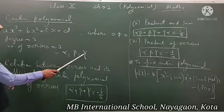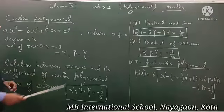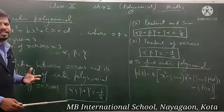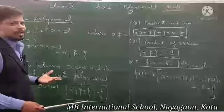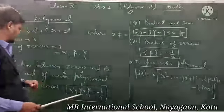Toh zeros alpha, beta, gamma aur a, b, c, d ke beech mein kya relation hai of a cubic polynomial — woh hume study karna hai.